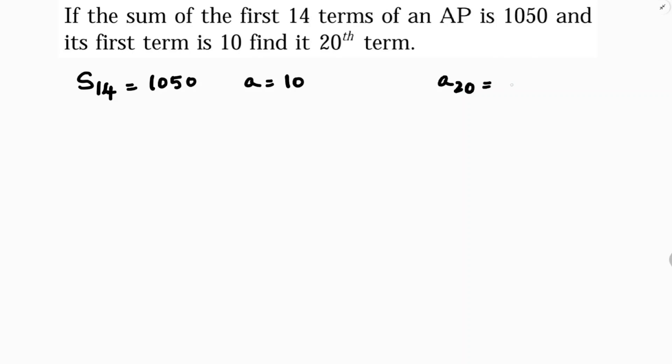So 20th term is A plus 19D because the formula AN equals A plus N minus 1 times D. So if you will see here, it is A plus 20 minus 1 which is nothing but A plus 19D.